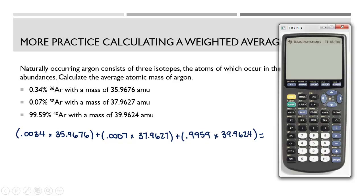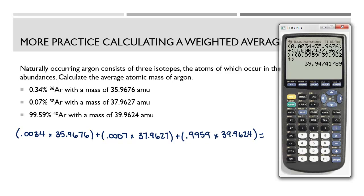Multiplying each percentage in decimal form by its corresponding mass and adding the three terms together, I'm expecting a result close to 39.96 because most argon is the heavy isotope, but slightly less than 39.9624 because the other isotopes are lighter. Typing into the calculator: (0.0034 × 35.9676) + (0.0007 × 37.9627) + (0.9959 × 39.9624) equals 39.9474 AMU. I'll keep six significant figures to match the precision of the given masses.